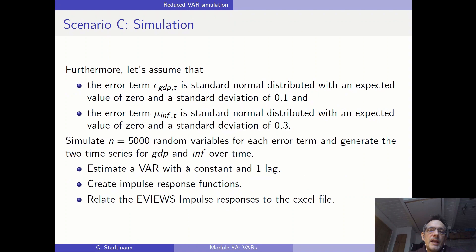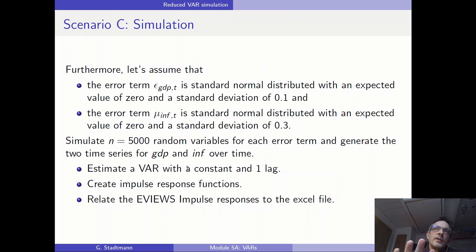Let's switch to scenario C and perform a simulation first in Excel. Then we are going to import this data into EViews, estimate a VAR, and afterwards generate impulse response functions.